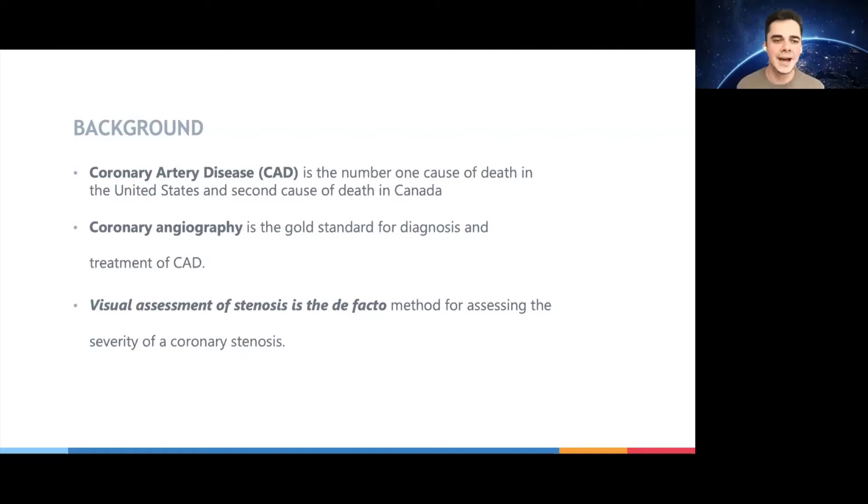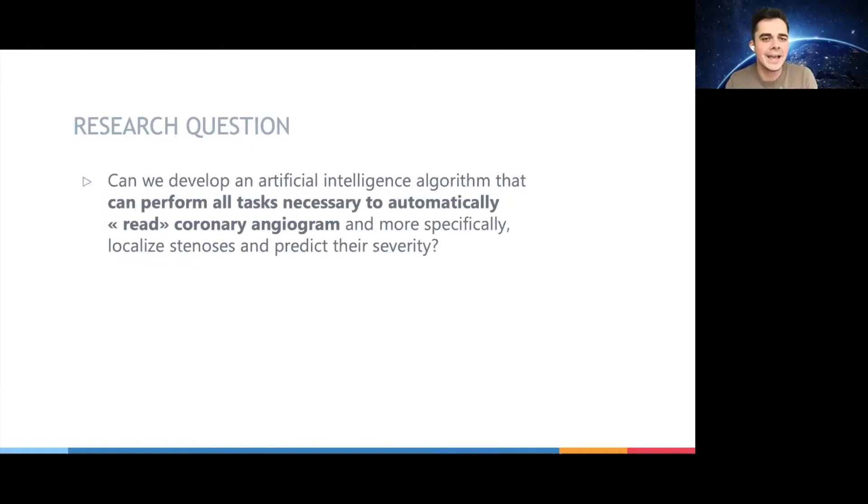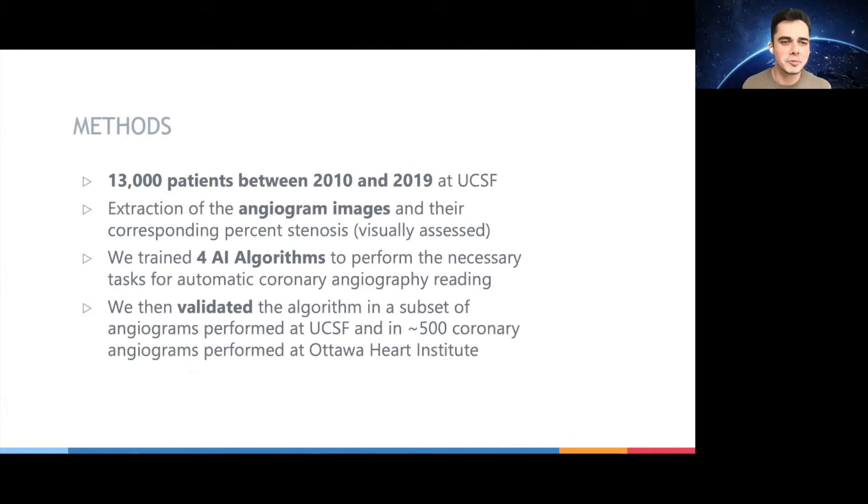As you're aware, coronary artery disease is the number one cause of death in the US and second cause of death in Canada. We perform coronary angiography as one of the most frequent tests on our cardiology patient because it is the gold standard for both diagnosing and treating coronary artery disease. However, despite the fact that this technology has existed for decades, we still rely in most cases on visual assessment of stenosis as the de facto method for assessing the severity of the stenosis. Yes, we have physiological tools and imaging, but those are not used as frequently as visual assessment. And the issue with visual assessment is that this measurement suffers from very high inter-observer and intra-observer variability, meaning that the same cardiologist might look at the same images and come up with different stenosis narrowings and different management for the same patients, leading to potentially inappropriate treatments or over-treatment and potentially poorer outcomes. So we ask ourselves the question, can we develop an AI algorithm that will perform all tasks necessary to automatically read a coronary angiogram and also more specifically, localize stenosis and predict their severity?